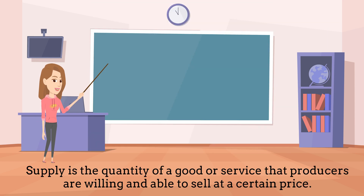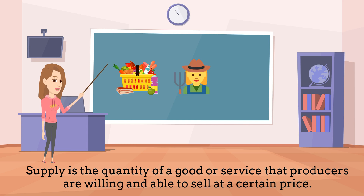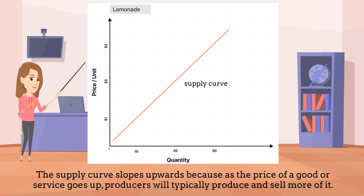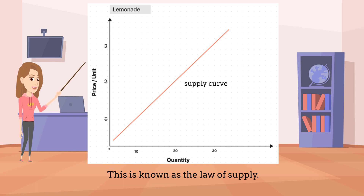Supply is the quantity of a good or service that producers are willing and able to sell at a certain price. The supply curve slopes upwards because as the price of a good or service goes up, producers will typically produce and sell more of it. This is known as the law of supply.